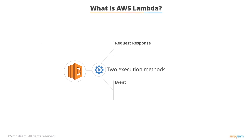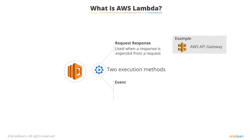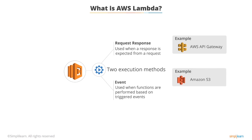RequestResponse is the method you would use when you expect a response from a request — for example, when integrating with AWS API Gateway. An event execution method is when you perform a function based on a triggered event; the responses may be in the form of objects stored in S3 or a document updated in DynamoDB.